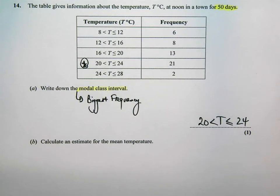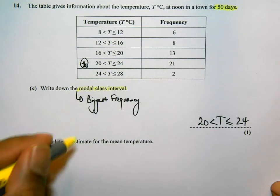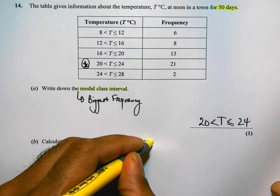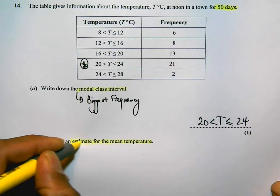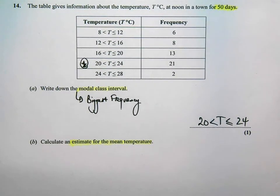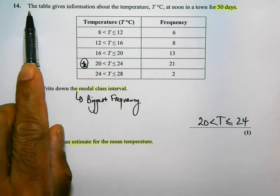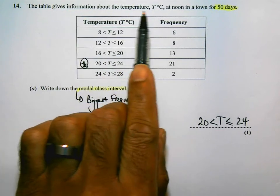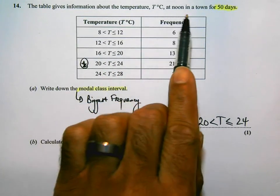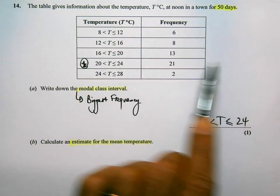Part B says, calculate an estimate for the mean. This is a pretty standard question from a frequency table. And you should be quite familiar with what you need to do at this stage. The first thing is, go back to the first line of the question.